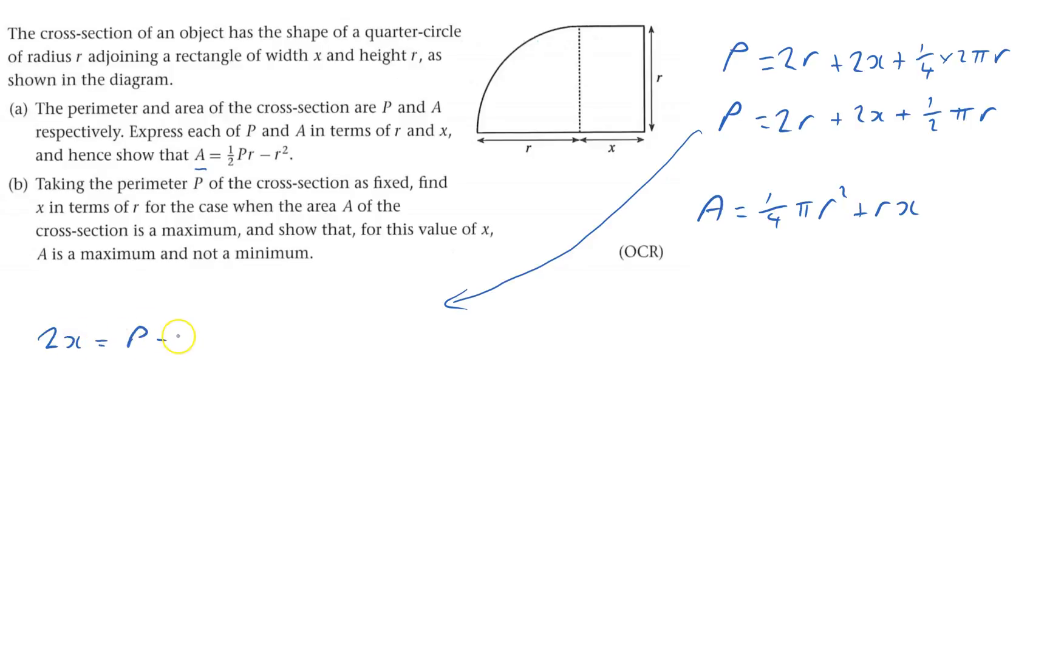2x will be P minus 2r minus half πr. That's just taking this and this off to the other side. Divide by 2 to get x equals a half P minus r minus a quarter πr.